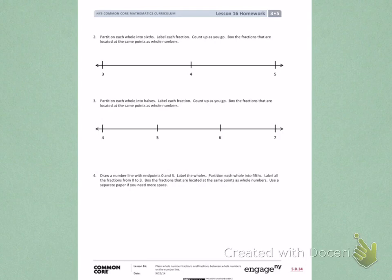Box the fractions that are located at the same points as the whole numbers. So I need to make sure that I'm partitioning them into sixths, labeling the fractions, and boxing the fractions that are whole numbers.